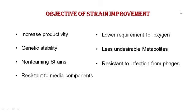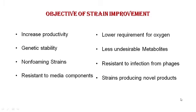The microorganism should be resistant to infection by phages, because phages contaminating the fermentation process may lyse the microorganisms and reduce productivity. It is highly desirable if we get a microorganism producing a novel product not yet in the market — that helps reduce competition and allows you to dictate the price. With these objectives in mind, we will study how to improvise a naturally isolated strain into the strain we desire.